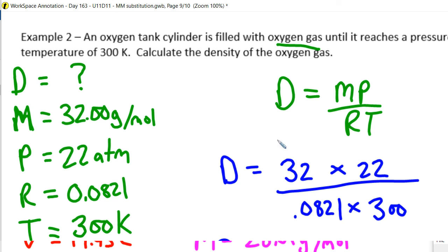0.0821 times Kelvin temperature, 300. And remember, do what's up top first. Do what's on the bottom second. Divide the totals at the top by the bottom. And we get a density of right around 28.6. Now, units will be molar mass, the masses in grams. And volume in these problems is always in liters.